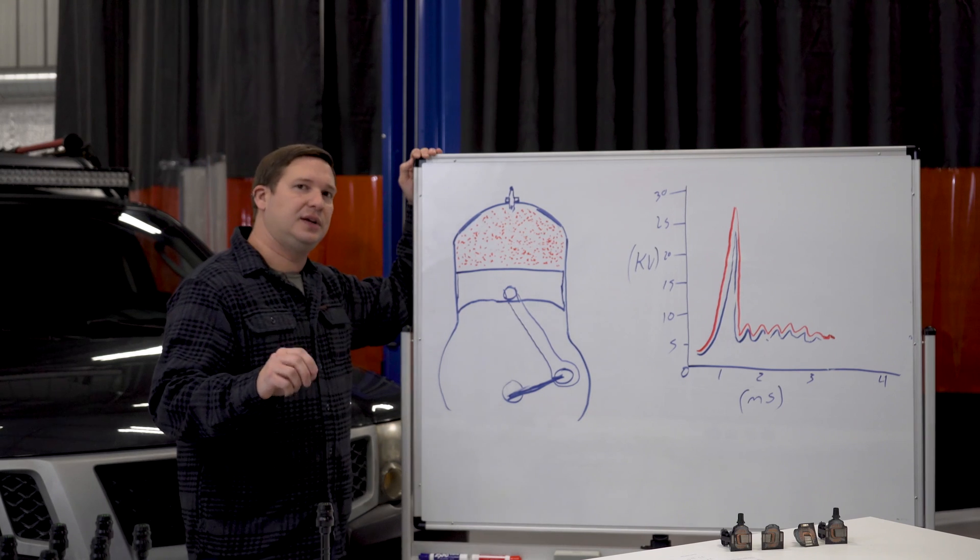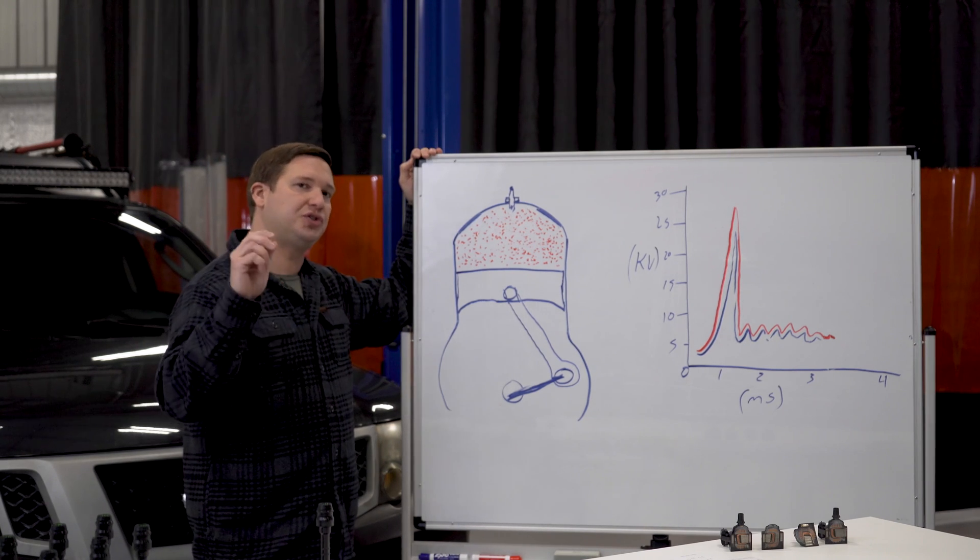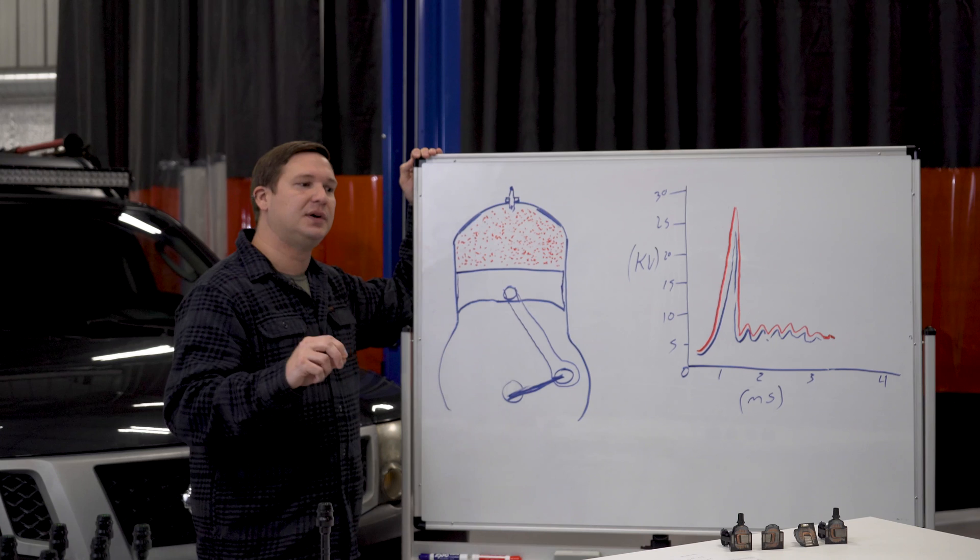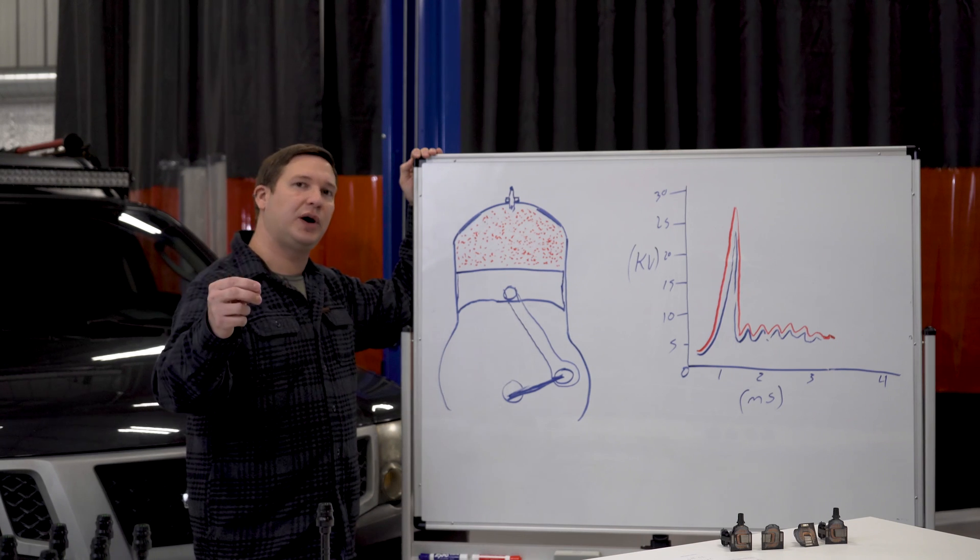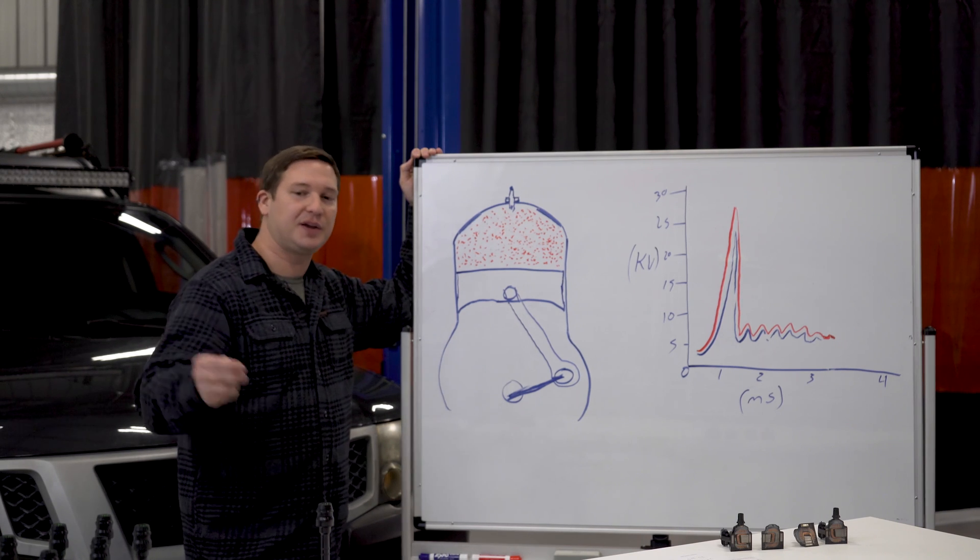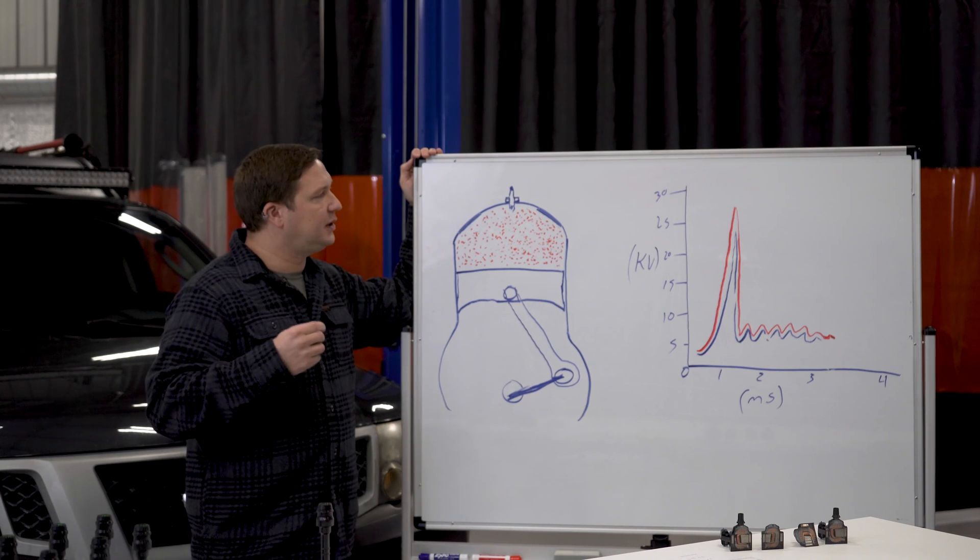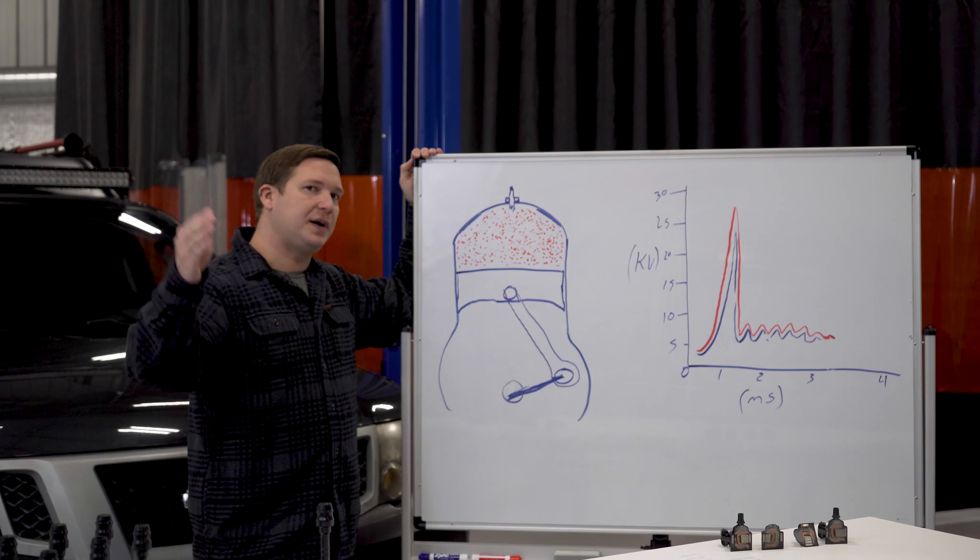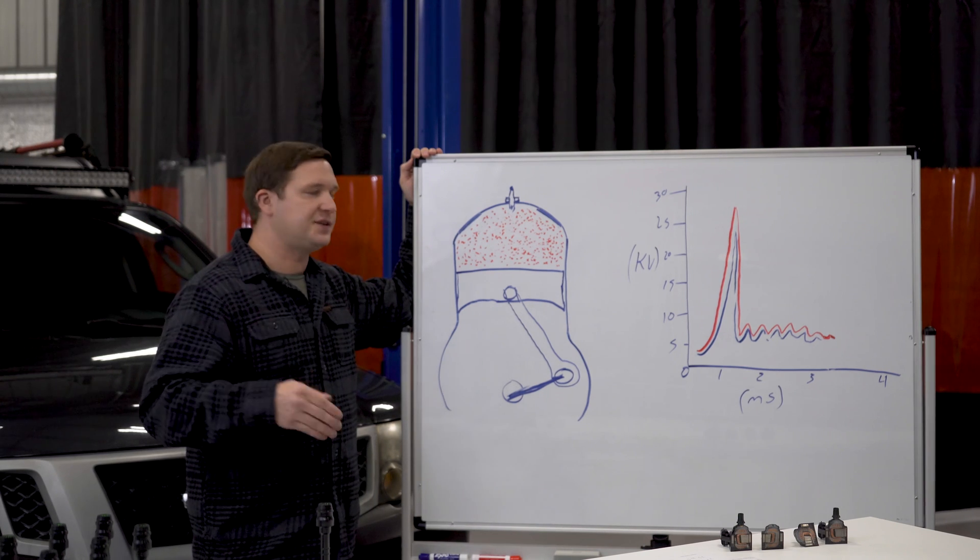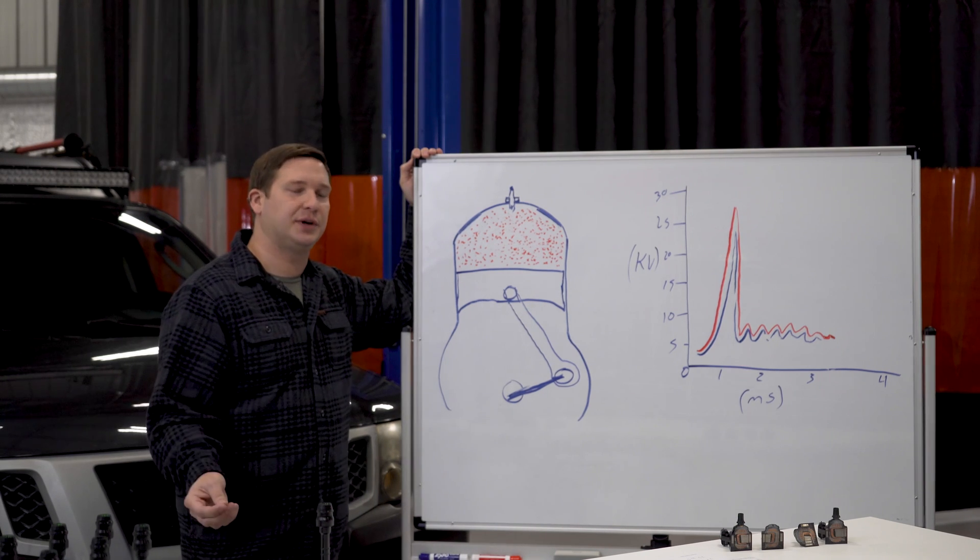Without tuning even, same charge duration, same dwell time, Z1 coils are going to have significant more output. Some situations or applications it's 20% more at the max, some it's 60% more at the max. They're going to give you more spark all the time no matter that charge duration. They're also going to reach what we call saturation sooner.